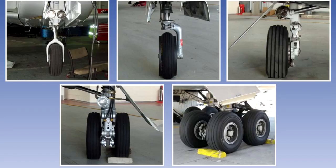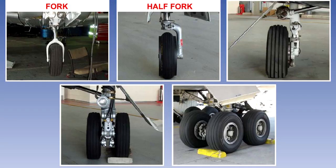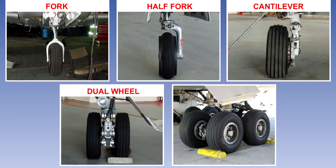There are a number of methods used for connecting the wheel or wheels to the undercarriage leg. The most common methods are fork, half fork, cantilever, dual wheel, and multi-wheel using a bogey or truck. The methods are fairly self-explanatory and an example of each is shown here.